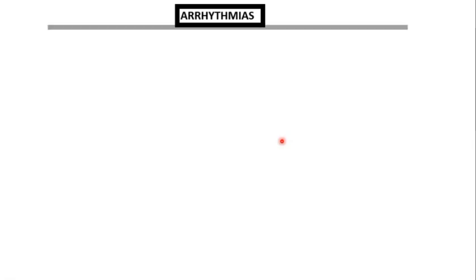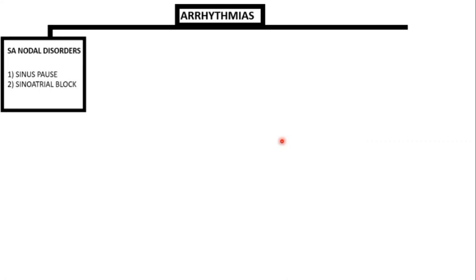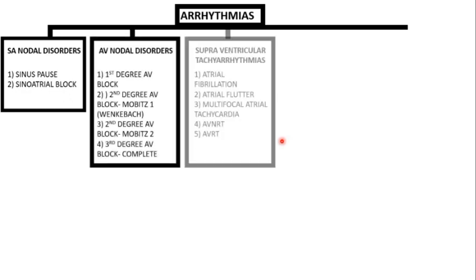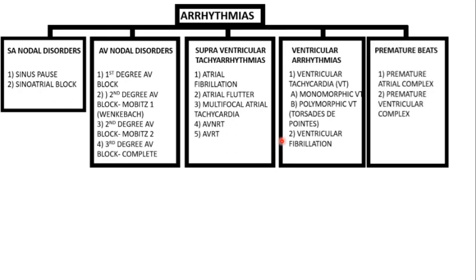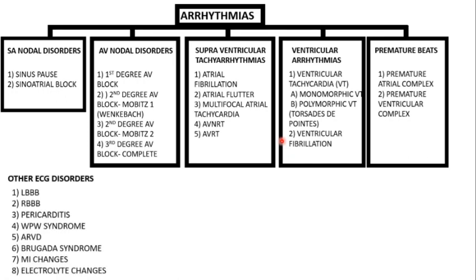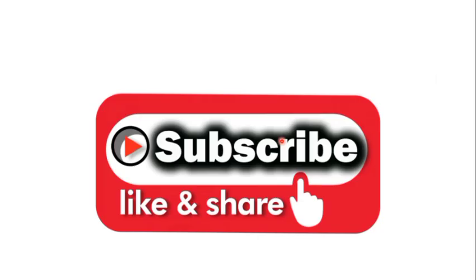Now let's see some ECG abnormalities — I'll just mention the names here and we'll have separate discussions with ECG strips. Common arrhythmias include SA nodal disorders, AV nodal disorders, SVT (supraventricular tachyarrhythmias), ventricular arrhythmias, and premature beats. Other important ECG disorders include bundle branch blocks, pericarditis, Wolff-Parkinson-White syndrome, Brugada syndrome, MI changes, ARVD, and electrolyte changes. That's all for today.